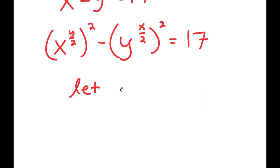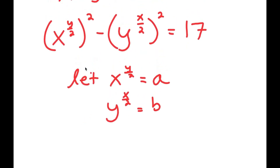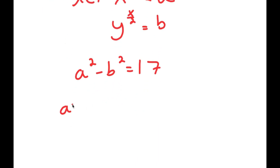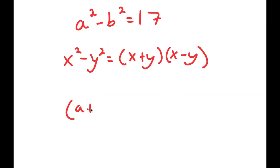I'm going to let x to the power of y over 2 equal the variable a, and y to the power of x over 2 equal the variable b. So if I substitute a for x to the power of y over 2 and b for y to the power of x over 2, I get a squared minus b squared is equal to 17. Now, if I have something in the form x squared minus y squared, this is equal to x plus y times x minus y. So a squared minus b squared equals a plus b times a minus b, which equals 17.